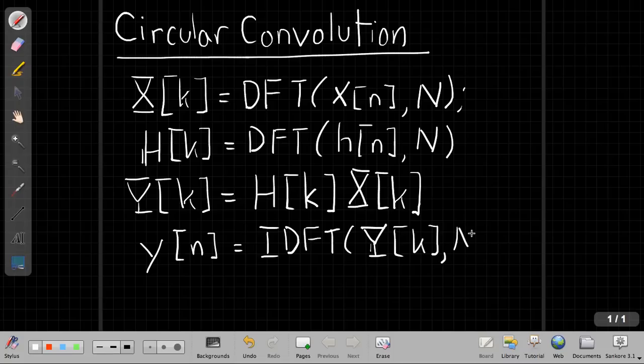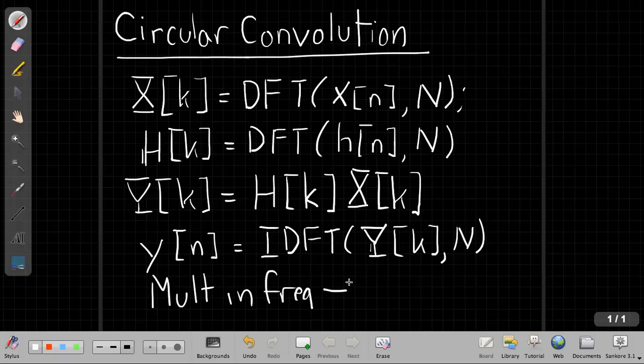If I take Y[k] and take its inverse DFT with N samples, what's the time domain signal? On one hand, our standard duality intuition tells us that multiply in frequency is the same as some kind of convolution in time. But we also know from class that when we do these DFTs, we have to worry about having enough samples in frequency to avoid aliasing in time.